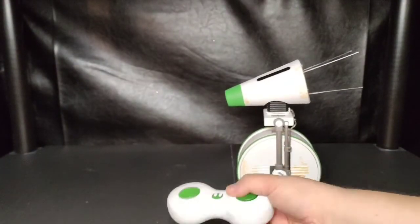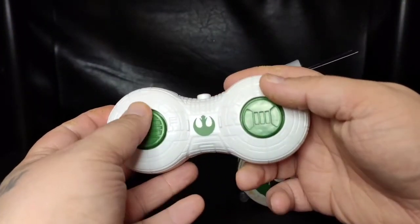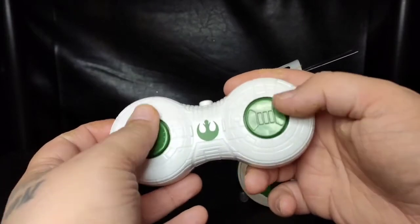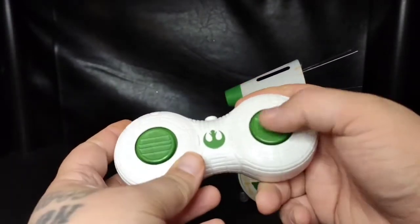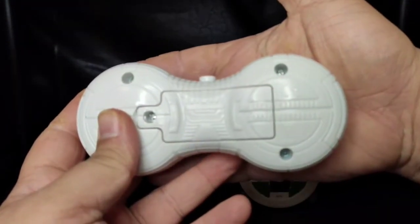Here is the controller. Very simple controller. You have back and forward, forward and back, however you want to say it, left and right. Very simple. This holds two triple A batteries.